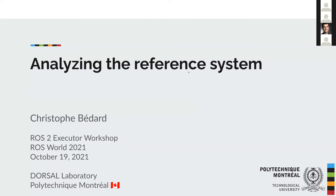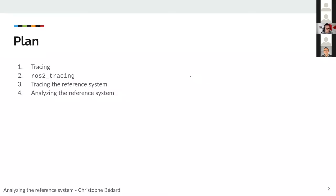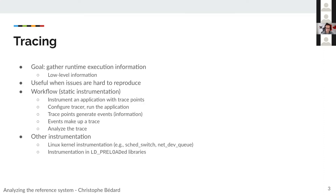I will talk about analyzing the reference system that Evan introduced. First I will talk about tracing as a way to extract information, then I will introduce ros2_tracing as a tool to do that for ROS2, then I will talk about tracing the reference system in general and the kind of information we can extract, and then I will end with analyzing the reference system itself.